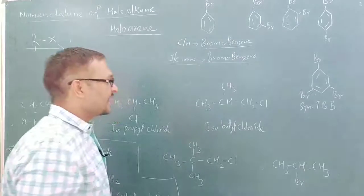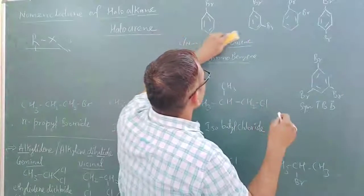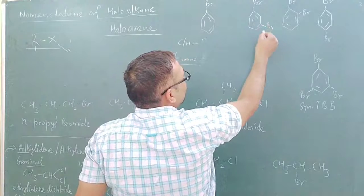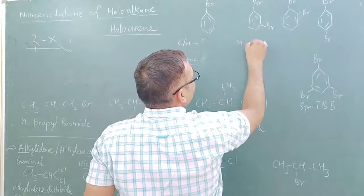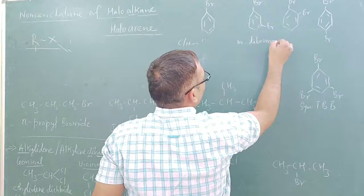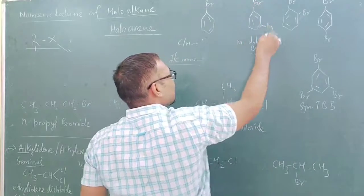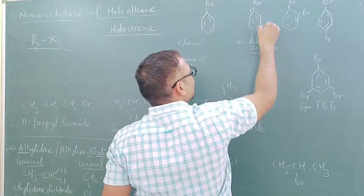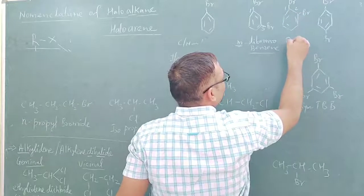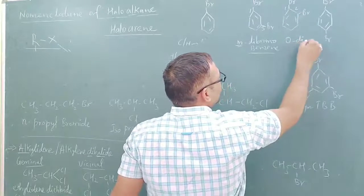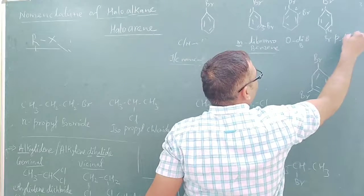Now we will look at positions. If one and three positions have bromine, the common name will be meta-dibromobenzene — 'di' because two bromine atoms are present, and 'meta' means 1,3 position. If at one and two positions, we use ortho — ortho-dibromobenzene. If at one and four positions, we use para — para-dibromobenzene.